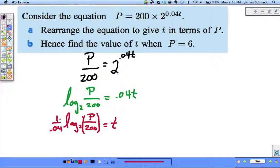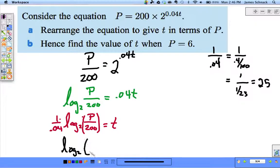There's t in terms of P. We could simplify this: 1/0.04 is the same as 1/(4/100), which equals 1/(1/25), which equals 25. So we could write 25 × log base 2 of (P/200), or log base 2 of (P/200)^25 if we wanted to, but we don't have to.